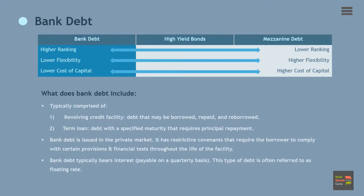Bank debt is an integral part of the LBO financing structure, consistently serving as a substantial source of capital, also referred to as senior secured credit facilities. It is typically comprised of a revolving credit facility, which may be borrowed, repaid, and reborrowed, and one or more term loan tranches.